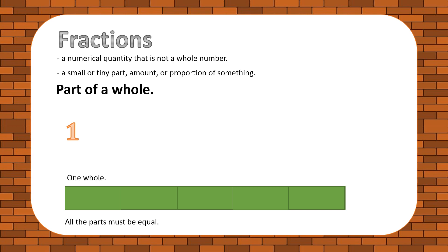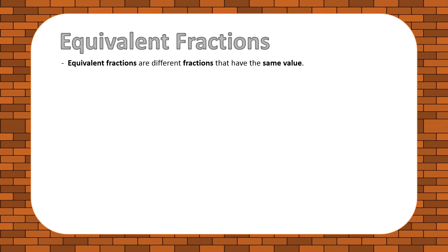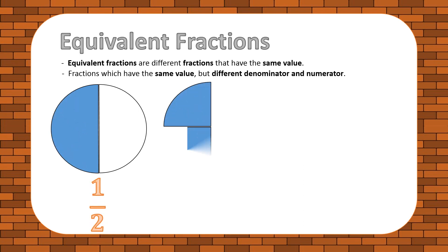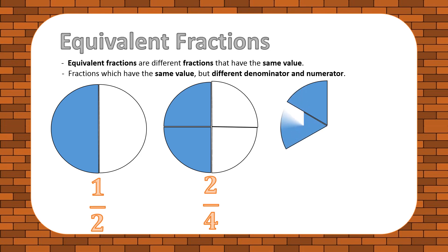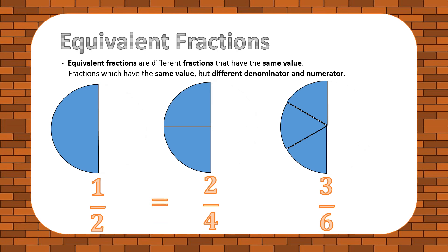Equivalent fractions are different fractions that have the same value. They have the same value but are presented with different denominators and numerators. For example: one out of two and two out of four are equivalent. Two out of four is equal to three out of six.